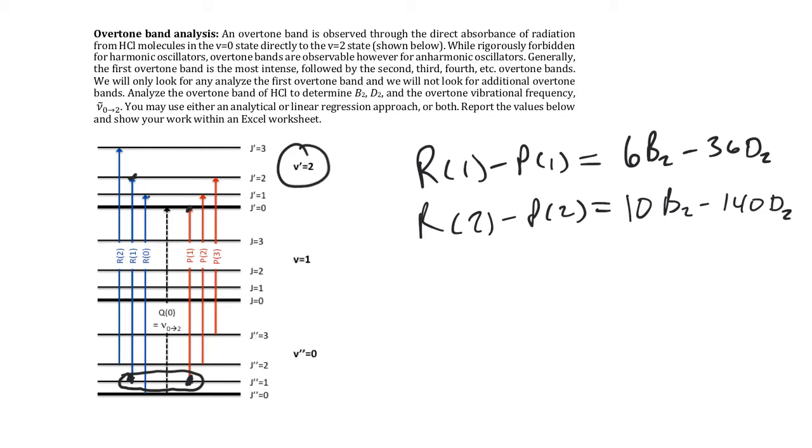And then we can determine the overtone frequency just like we did for the fundamental frequency by taking the R0 plus the P1 and showing that that works out to be equal to the overtone frequency plus 2B1 for the R0. And then we're going to add the P1 transition, which is the overtone frequency minus 2B0. So we get the same basic equations, except now we're talking about the overtone frequency. Now, the overtone band is the one that has bands centered around 5,600 wave numbers. So make sure to use the proper band to determine your B2 and D2 values.